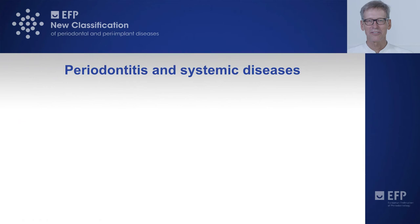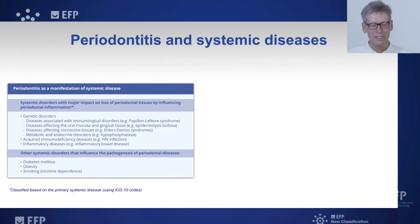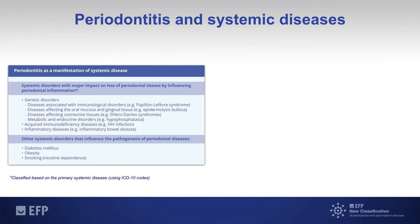To summarize, we can come up with two categories. First, we have periodontitis as a direct manifestation of systemic disease — systemic disorders with a major impact on loss of periodontal tissues by directly influencing periodontal inflammation. These should be classified based on the primary systemic disease using the ICD-10 coding system. These include genetic disorders: diseases affecting immunological disorders like Papillon-Lefèvre, diseases affecting oral mucosa and gingival tissues like Epidermolysis Bullosa, and diseases affecting connective tissues like Ehlers-Danlos syndromes. Also metabolic and endocrine disorders like hypophosphatasia.